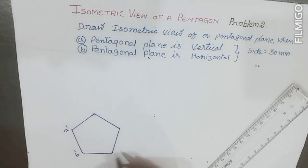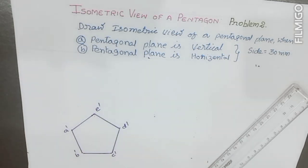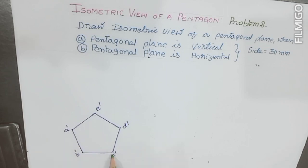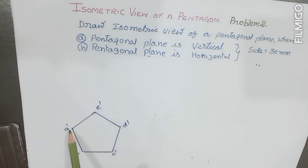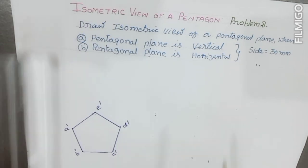We label the front view as a-dash, b-dash, c-dash, d-dash, e-dash. Now, to draw this pentagon in isometric view, the sides such as a'-b', c'-d', e'-d', or a'-d' are not parallel to any one of the isometric axes. So these lines are called non-isometric lines. In this case, we have to inscribe the pentagon inside a rectangle.